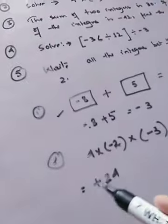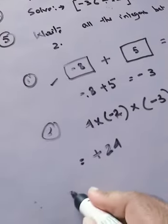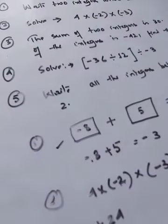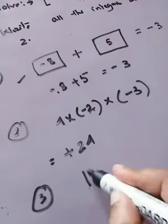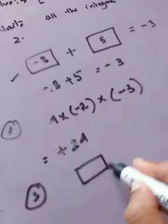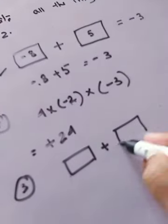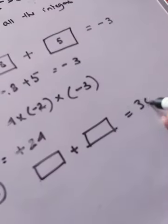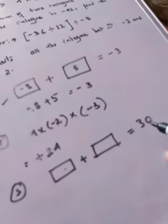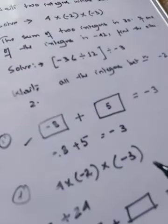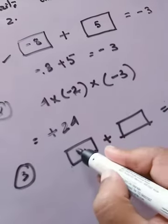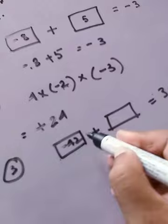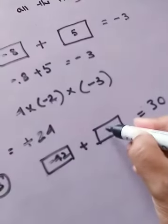Question number three: the sum of two integers is 30. We are not told what the two integers are, but we know that adding them gives 30. The second part of the question tells us that one of the integers is minus 42. We need to find the value of the other integer.